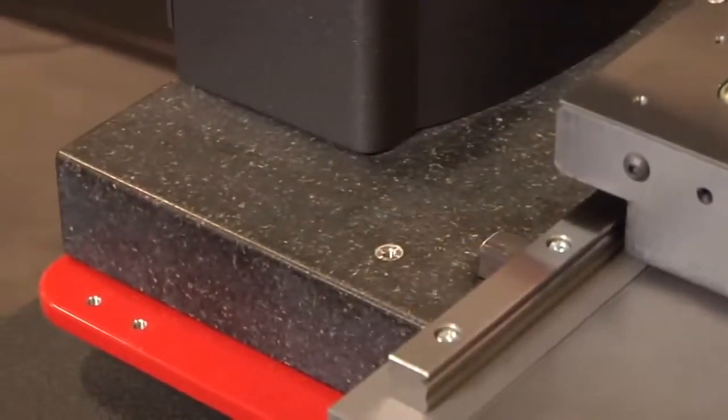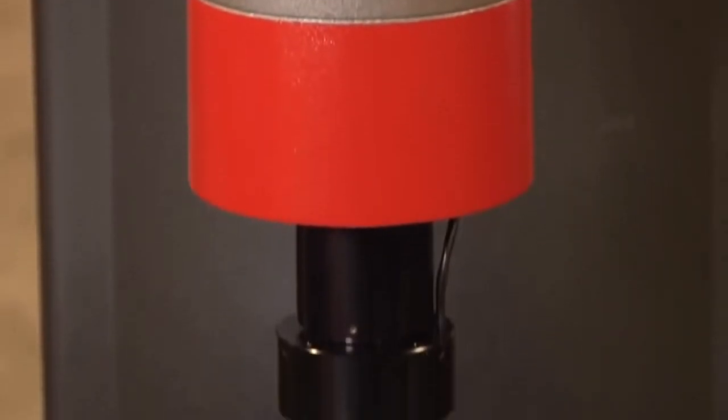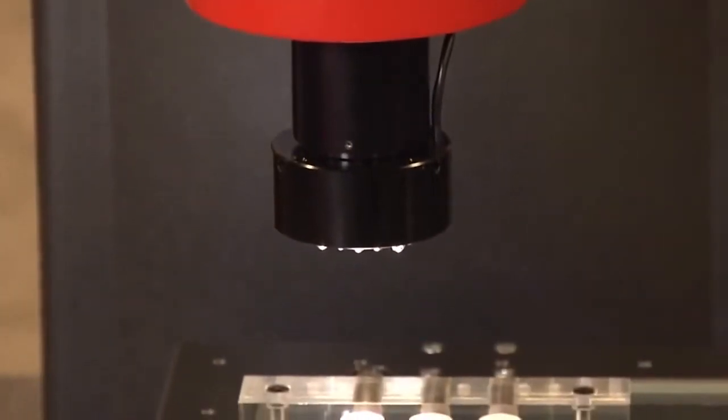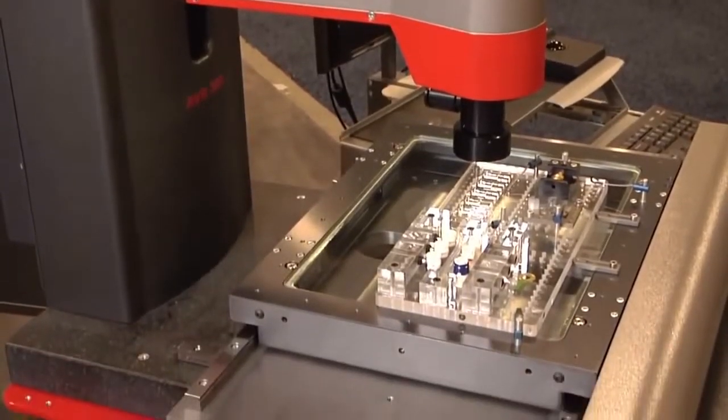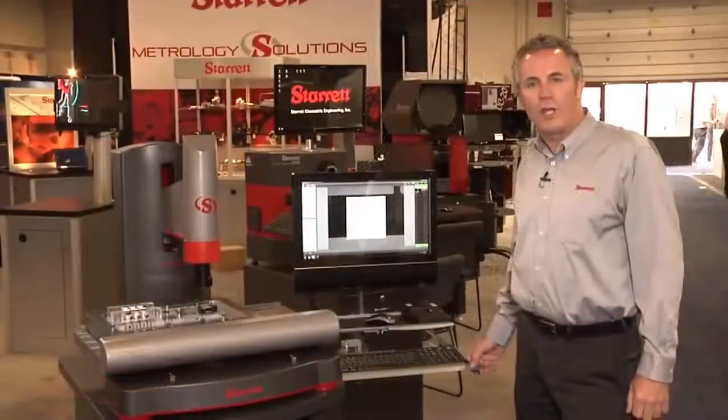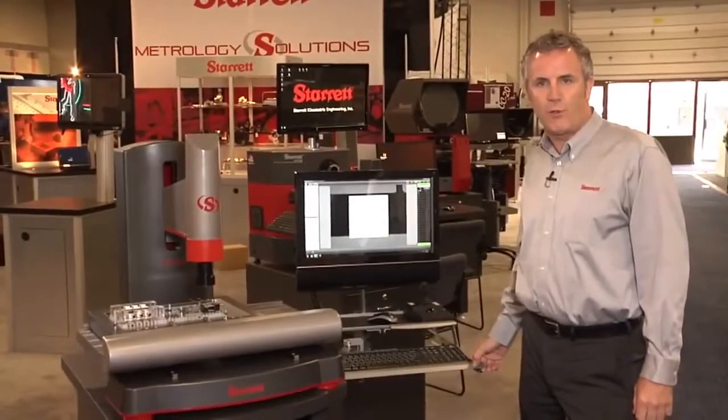On a full granite base, we have a 12 to 1 zoom lens with LED lighting. We have a ring light, sub-stage illumination, and through the lens lighting. So the AVR300 uses the M3 measuring software.